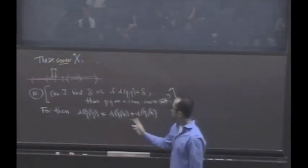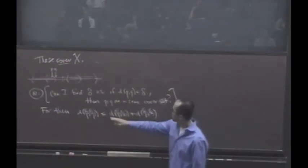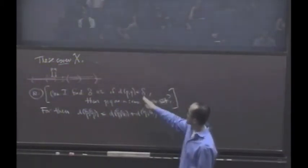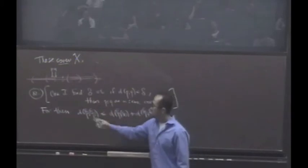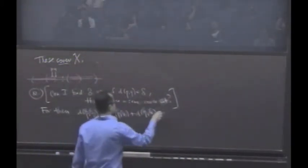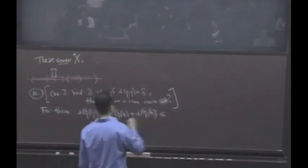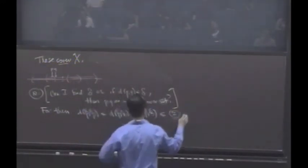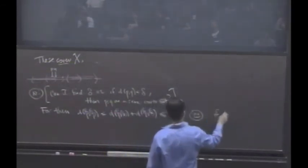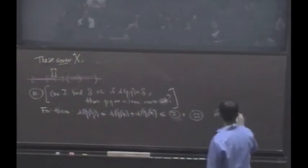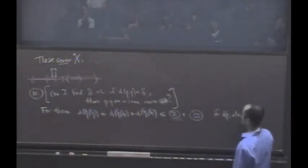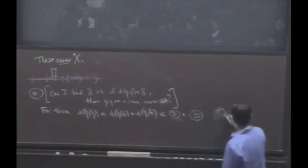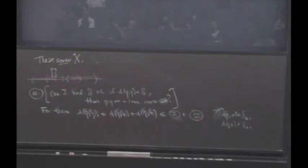And now these two things are going to be bounded as long as P and Q are within the same delta ball, then they are within the same delta sub X. Right? So these things are both going to be bounded by Smiley over 2. Oh, Smiley plus Smiley. Since the distance between P and X is less than delta sub X. And the distance between Q and X is less than delta sub X. Because they were in the same ball.